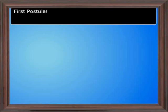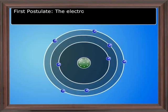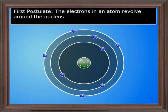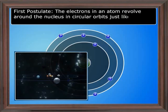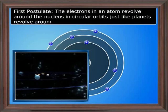First postulate. The electrons in an atom revolve around the nucleus in circular orbits just like planets revolve around the sun.